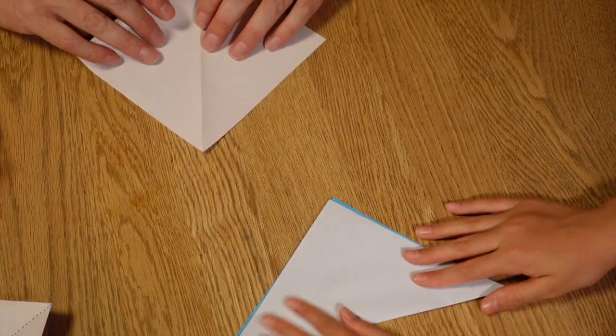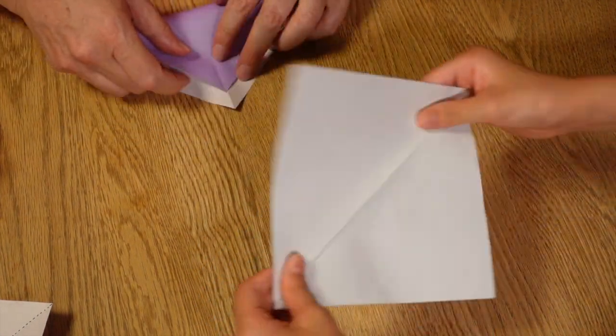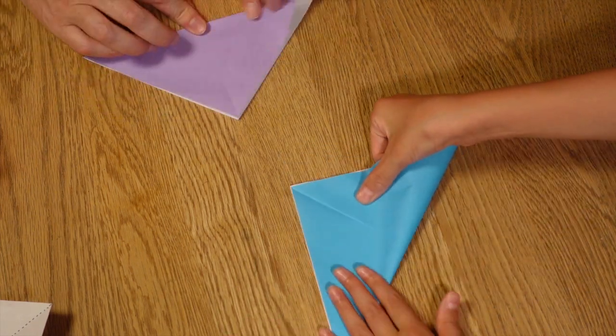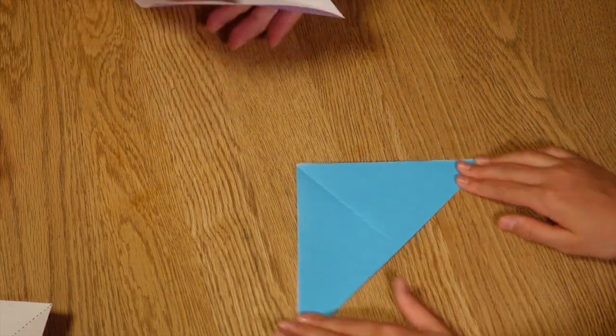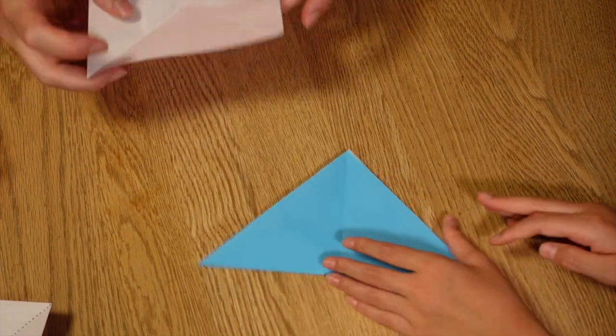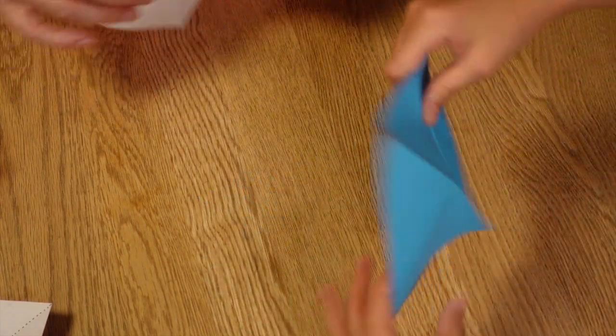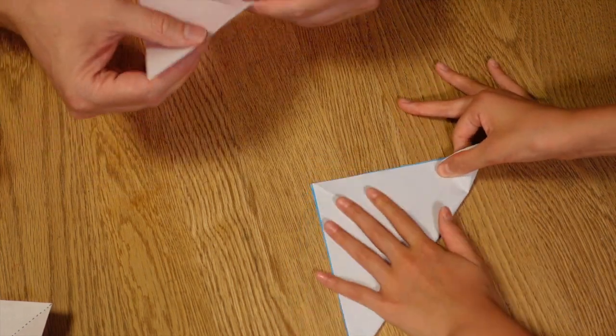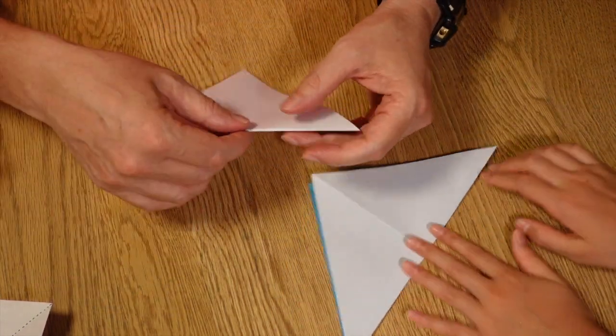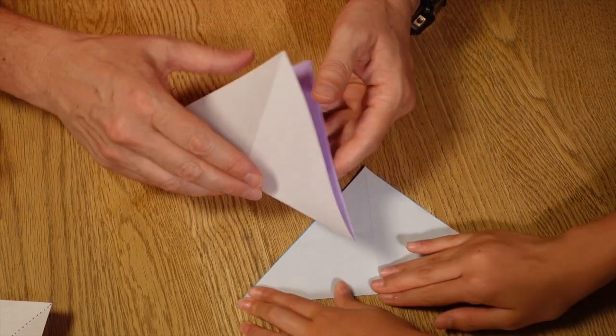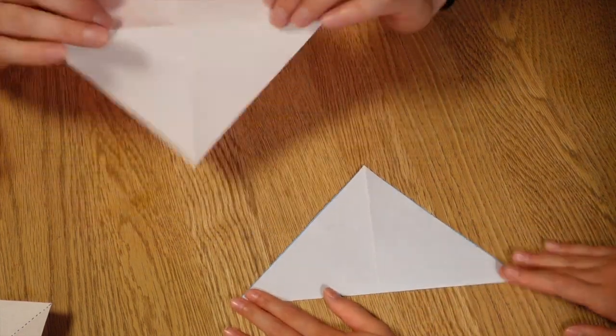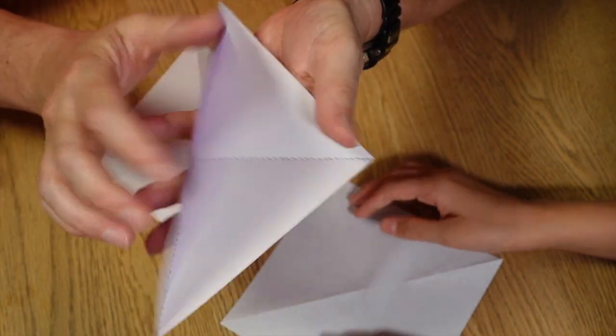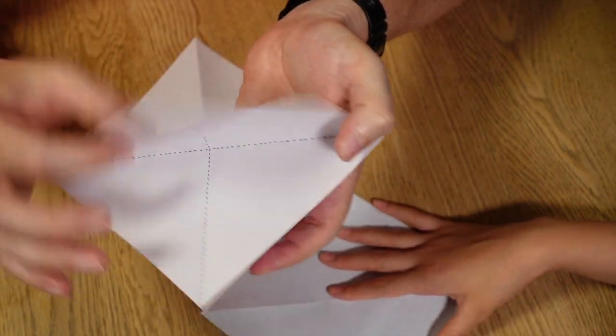And then fold this way. We've got two triangles. And we need to fold the opposite way as well. I went out of camera. Okay. Let's go for two. So we've done this one. We've gone this way. And we've done this way.